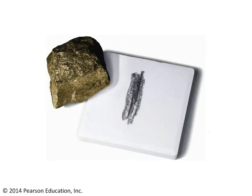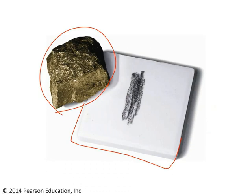Then there's also streak. Here's an example of the mineral pyrite, which has a nice golden color and a metallic luster. When you scrape pyrite against a streak plate, you'll see that it leaves behind a characteristic dark gray colored streak. The color of that powdered form of the mineral is actually a more reliable indicator of which mineral you have than the color of the mineral itself.